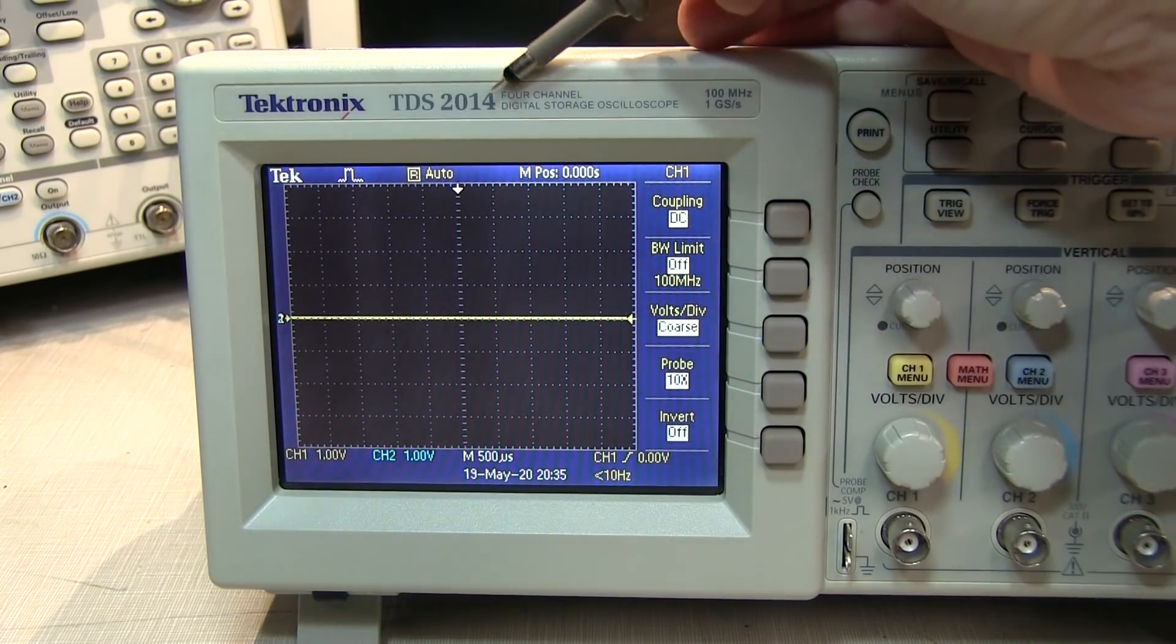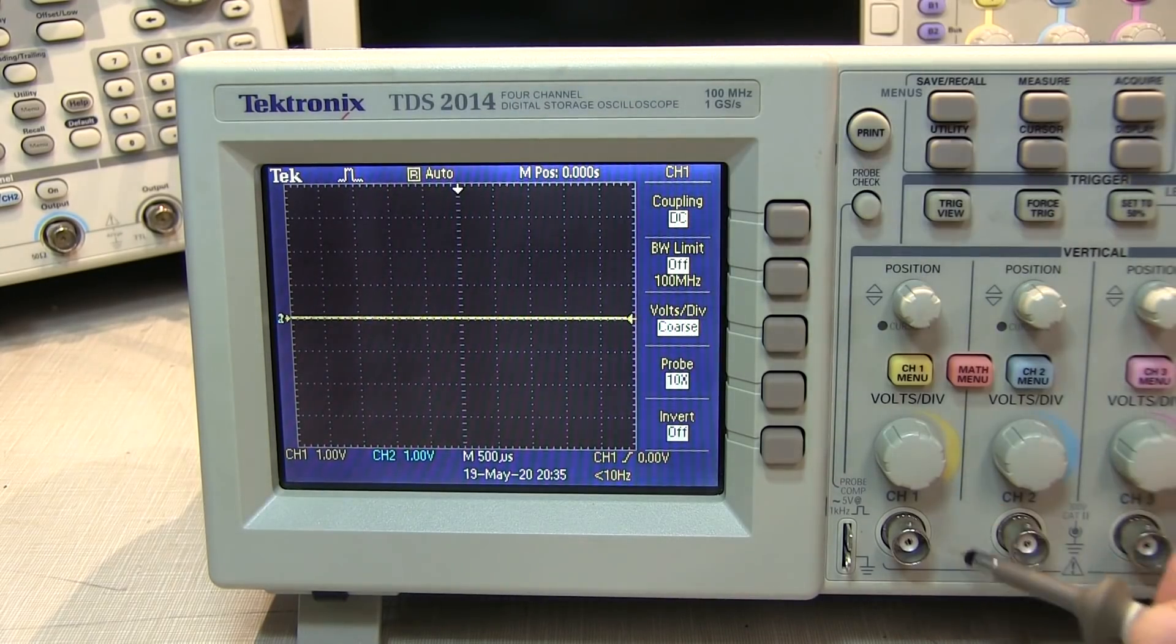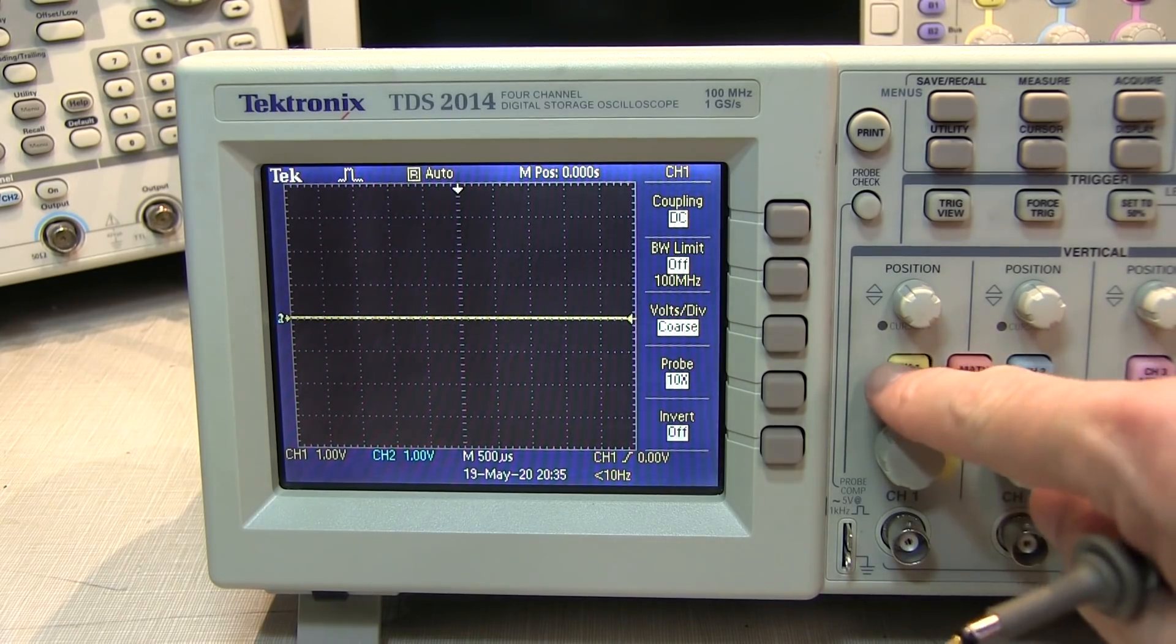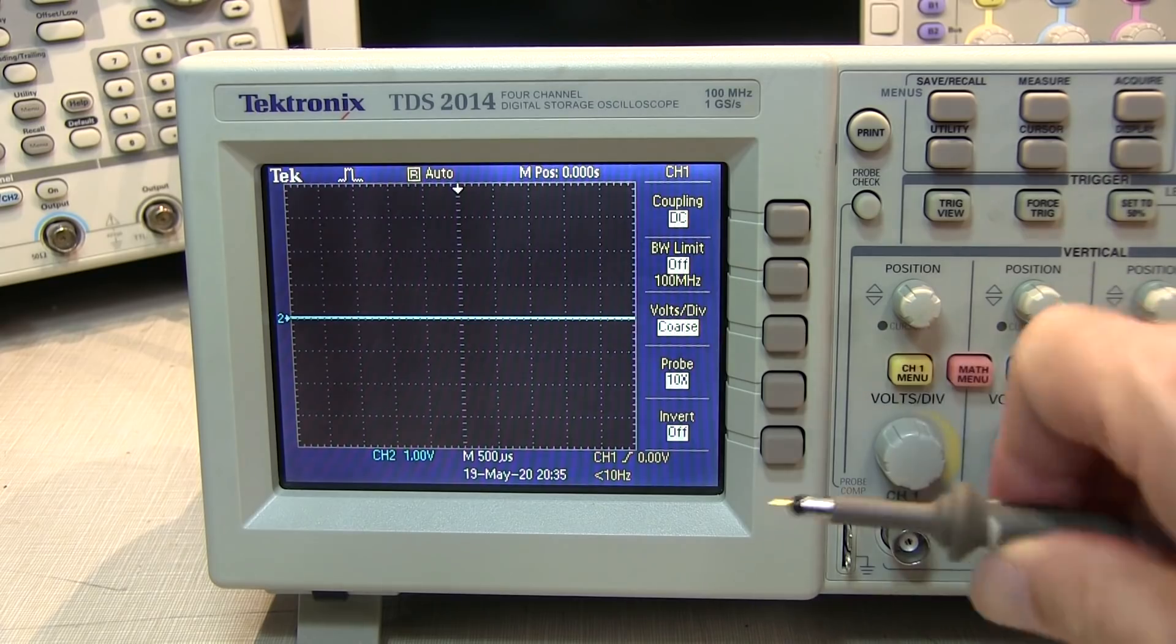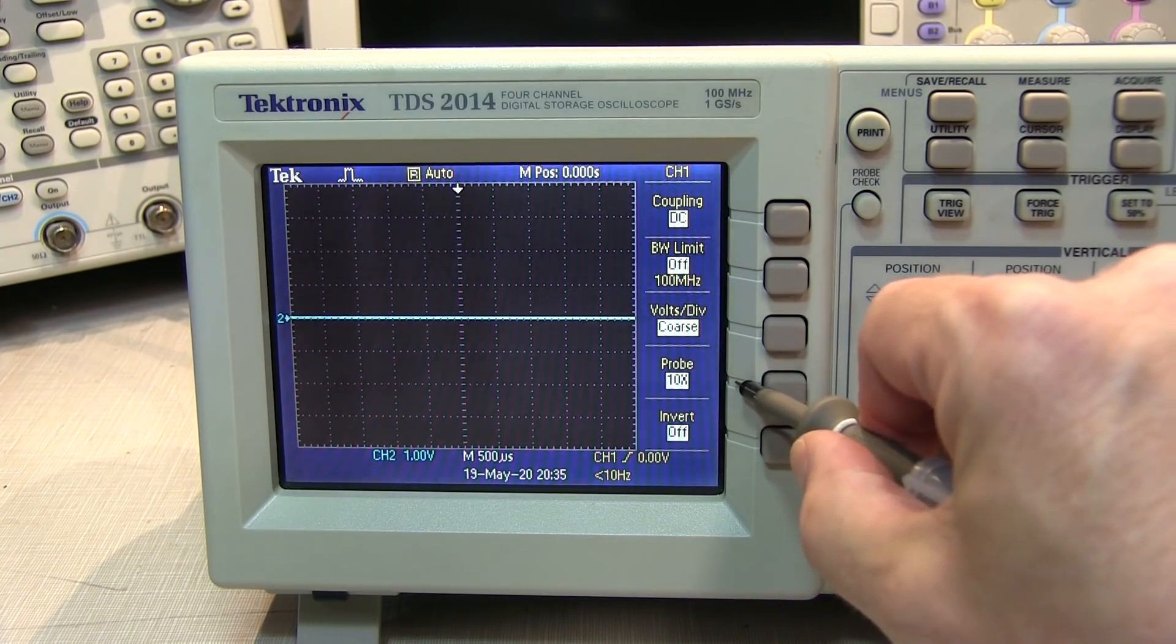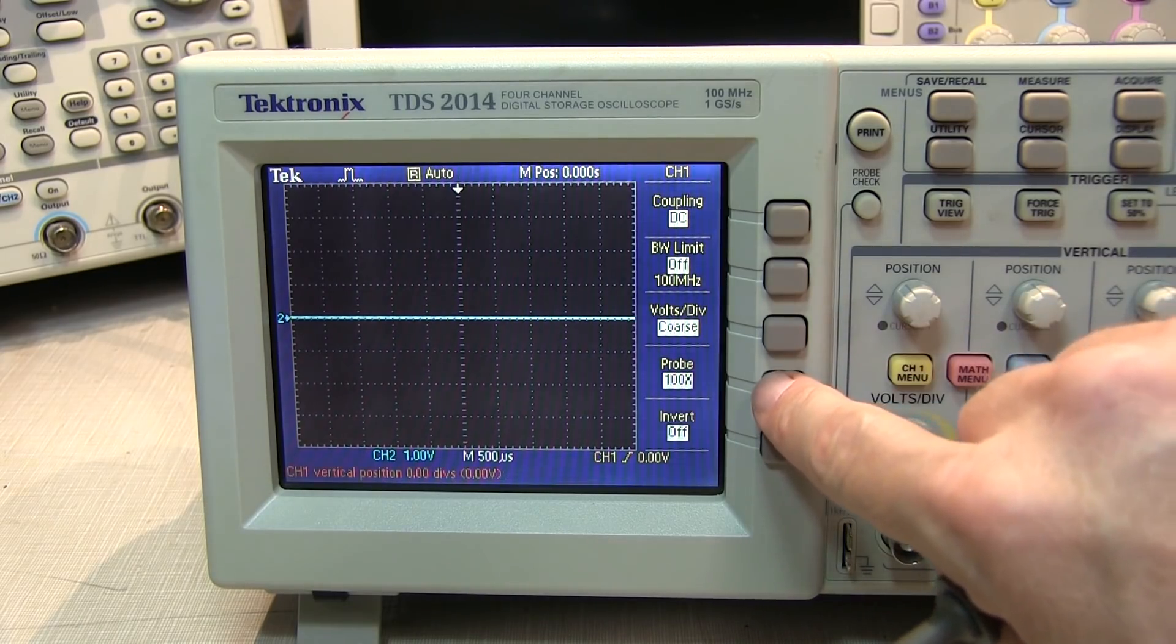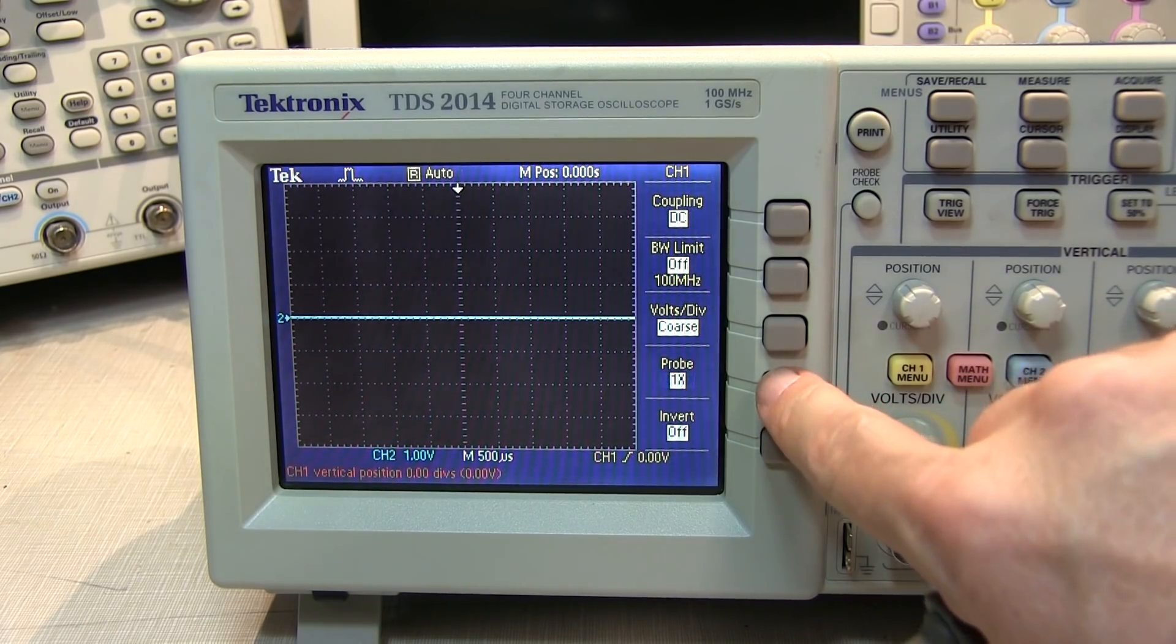Scopes such as this entry level TDS2000 does not have the sensing ring around the input connectors for the vertical channels. So even if I plug that 10x probe with the indicator ring on here, the vertical scale wouldn't change. But they do provide a means, through the vertical channel menu, to tell the scope what probe you've got attached. In this case, it says 10x. And I can cycle through 10x, 100x, 1000x, or 1x.